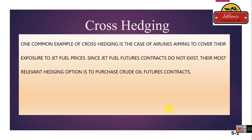One common example of cross hedging is the case of an airline aiming to cover their exposure to jet fuel prices. The airline wants to insulate themselves against the risk of a price increase in jet fuel. Since jet fuel futures contracts do not exist on the Chicago Mercantile Exchange or any other futures market, their most relevant hedging option is to purchase crude oil futures contracts.